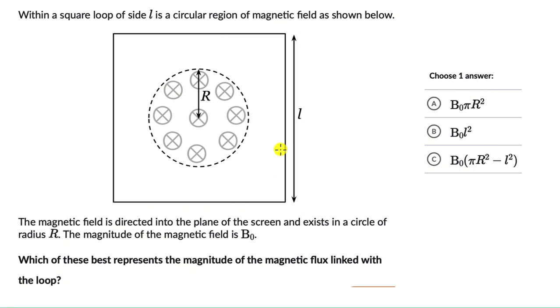So we have this region of loop of side L and there is a loop of radius R through which there is a magnetic field. Now we know that the magnitude of magnetic flux φ is equal to BA cos θ.